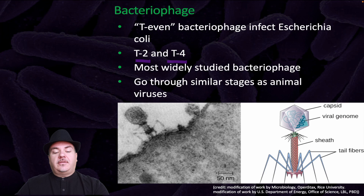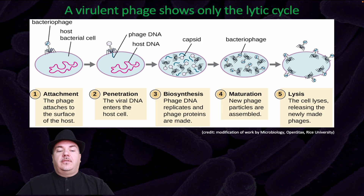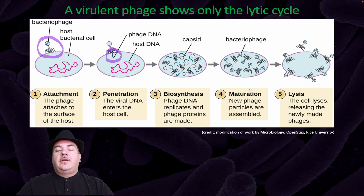A virulent phage shows only the lytic cycle. First, attachment: the phage attaches to the surface of the host cell. Then penetration: viral DNA enters the host cell. Biosynthesis: phage DNA replicates and phage proteins are made. Maturation: new phage particles are assembled. Finally, lysis: the cell lyses or breaks open, releasing the newly made phages and killing the cell.